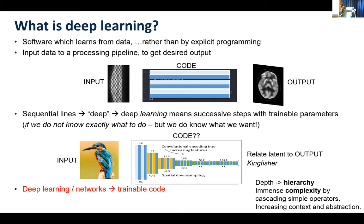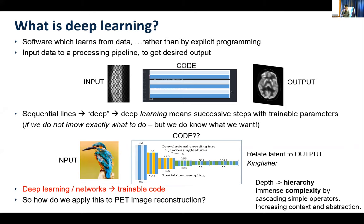Just to emphasize the concept of depth and the fact that we can build up this hierarchical representation. Imagine this image was a collection of atoms — then in the next layer we could group those atoms together to form molecules, group molecules to form materials, and then group materials to form objects and so on. So we have this depth, this growing hierarchy of features. Anyway, how do we apply this to PET reconstruction?